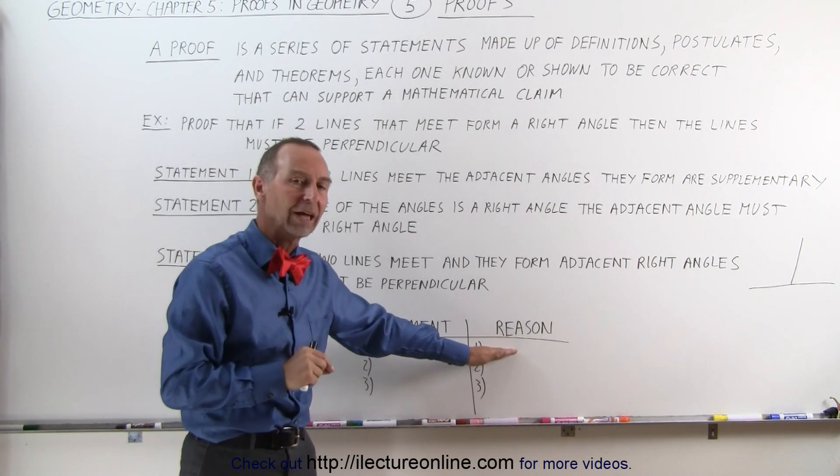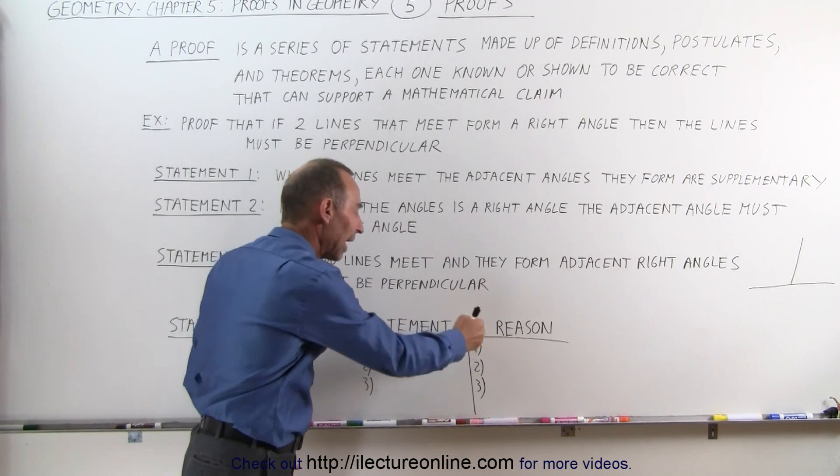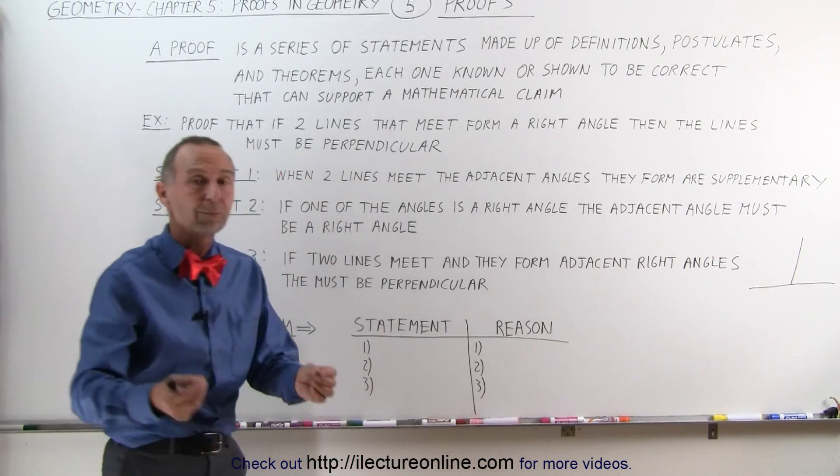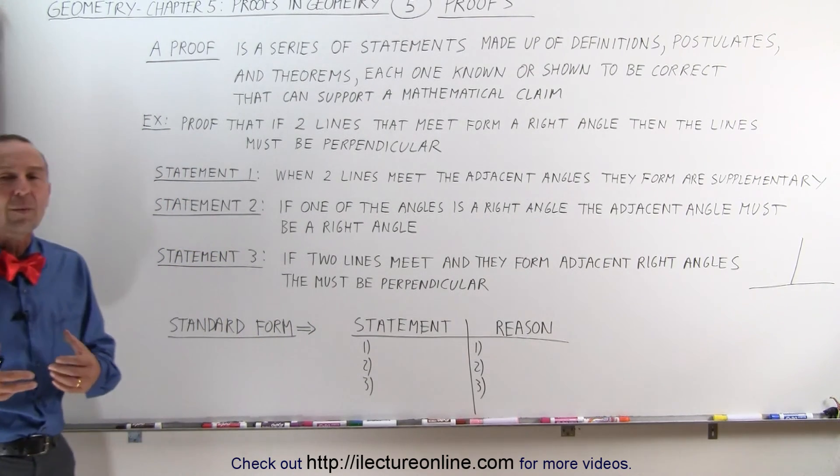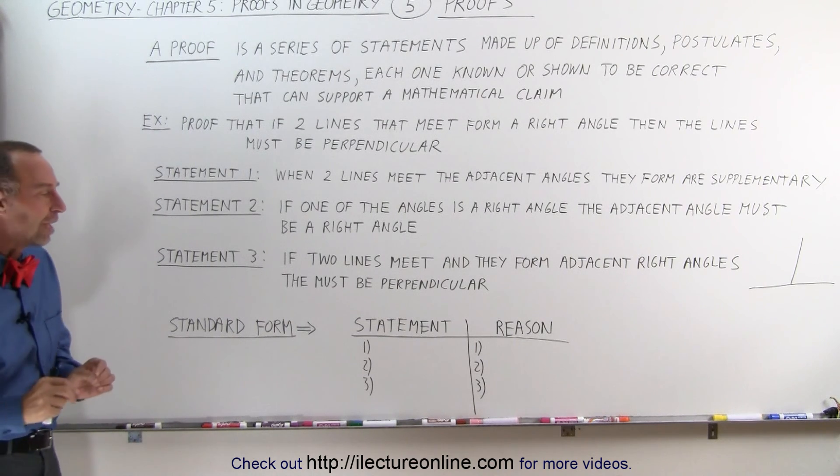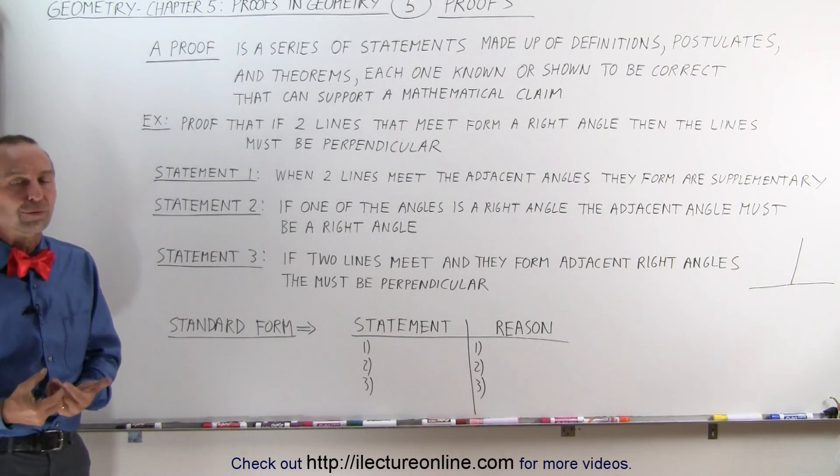Which postulate is that? Which definition allows us to make that statement? And so if we have good reasons for making those statements together, we can then prove something. And that's how we prove things in geometry. We come up with statements, we give you the reasons for those statements, and then together as a group, they form a proof.